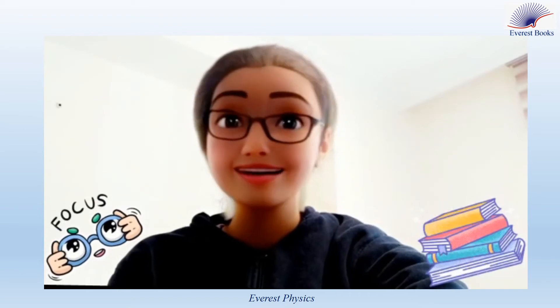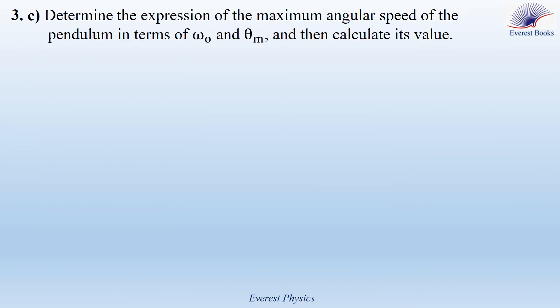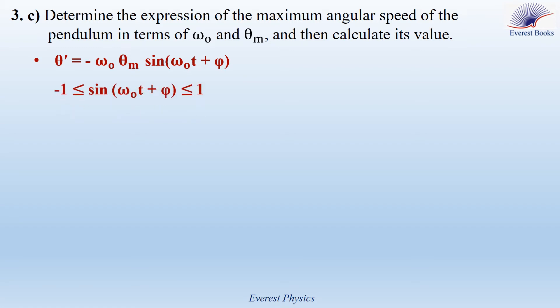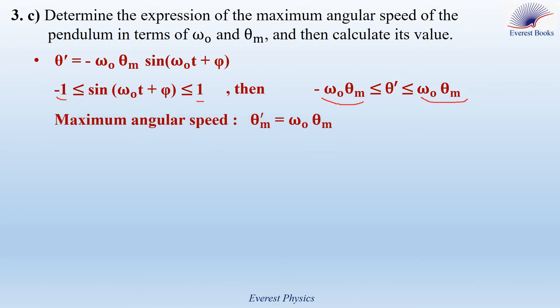Part 3C: Determine the expression of the maximum angular speed in terms of omega₀ and theta_M, and calculate its value. The angular velocity is minus omega₀ theta_M sine(omega₀ t plus phi). Since sine varies between minus 1 and plus 1, theta prime varies between minus omega₀ theta_M and plus omega₀ theta_M. Therefore, the maximum angular speed theta prime_M equals omega₀ theta_M. Substituting omega₀ equal 1.256 and theta_M equal 0.2 pi, the maximum angular speed equals 0.8 radians per second.